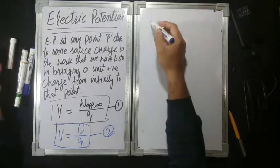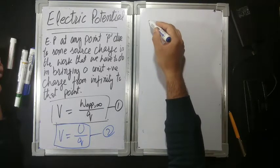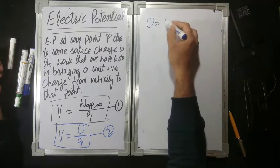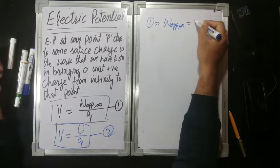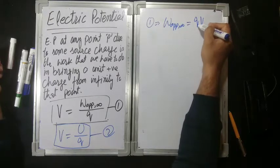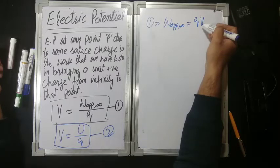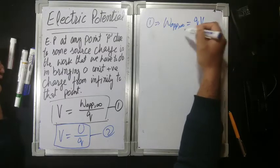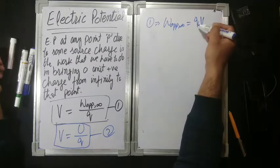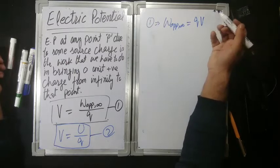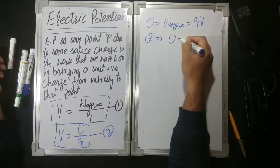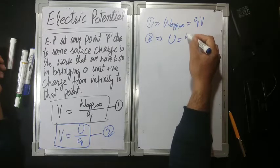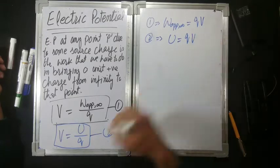Equation one ko hum aise bhi likh sakti hai now. W applied from infinity is equal to q times V — charge times potential. Ab aapko kitna work karna padega q ko lane mein, agar aapko potential pahle hi pata hai us point ka, to simply q times V. Phir equation two can be written as: potential energy U at a point associated with charge q is q into V.